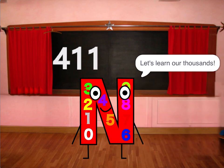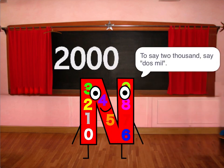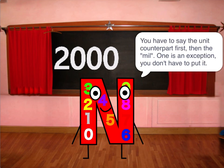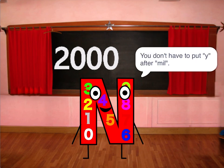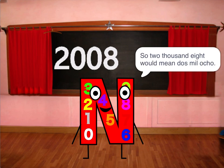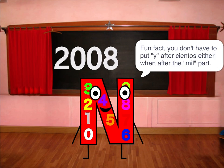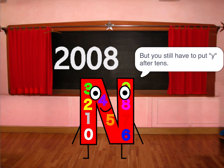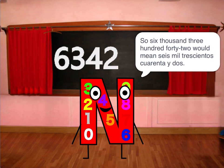Let's learn our thousands. To say two thousand, say dos mil. You have to say the unit counterpart first, then mil. One is an exception — you don't have to put uno before mil. You also don't have to put y after mil. Fun fact: you don't have to put y after -cientos when it comes after the mil part, but you still have to put y after tens. So six thousand three hundred forty-two would be seis mil trescientos cuarenta y dos.